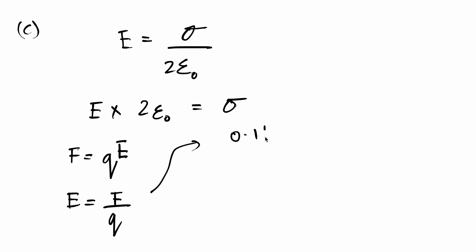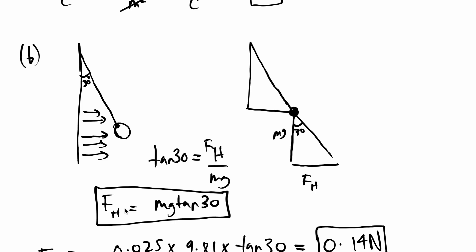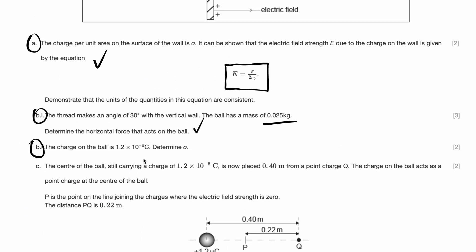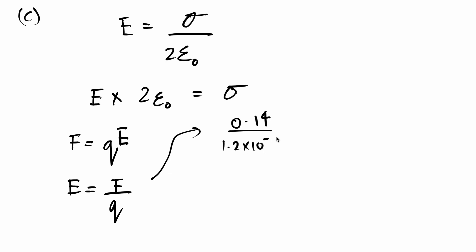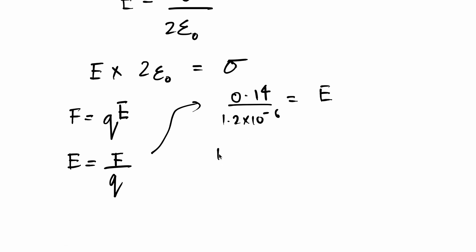Force is equal to charge times electric field strength. So if we rearrange, we can get that electric field strength is equal to force over charge. Did we not solve for force in the previous question? And do we not already know the charge? Well, in that case we can just solve for E. We know that 0.14 divided by charge which is 1.2 to 10 to the power of negative 6. That is equal to our electric field strength.